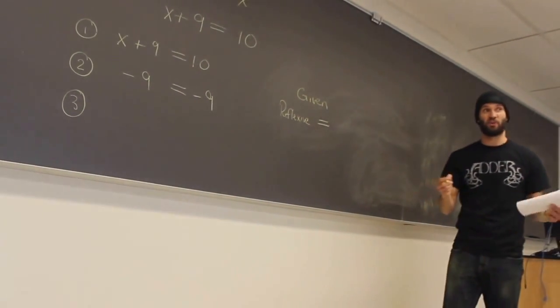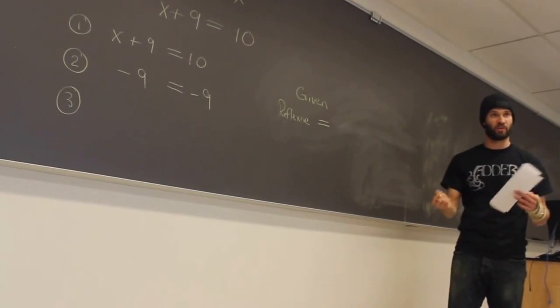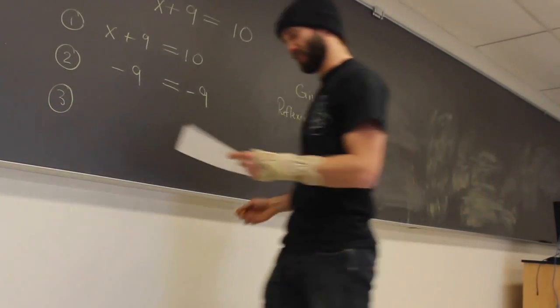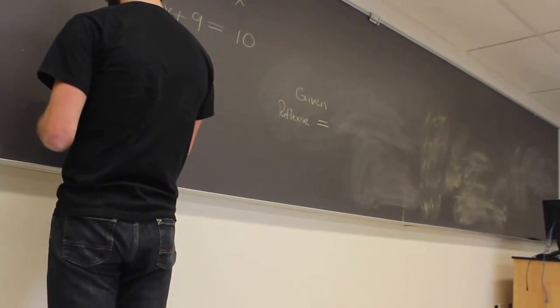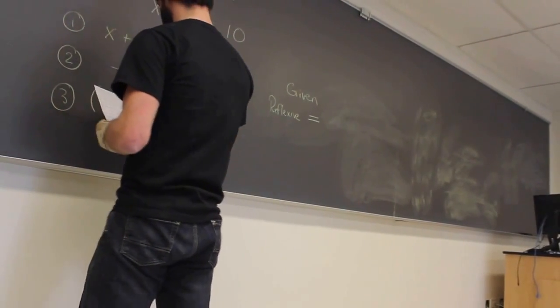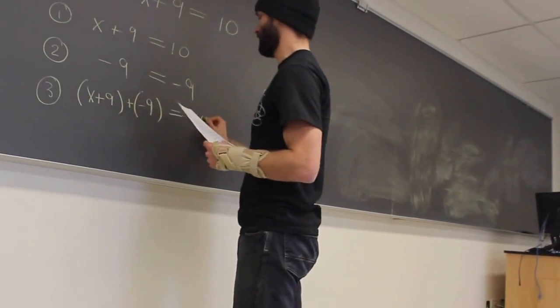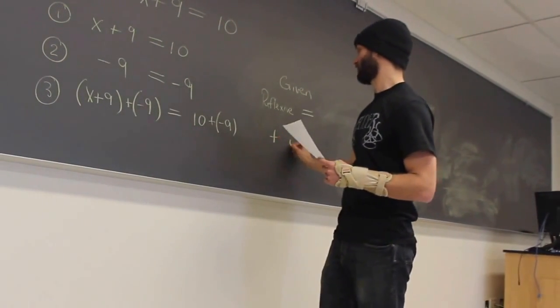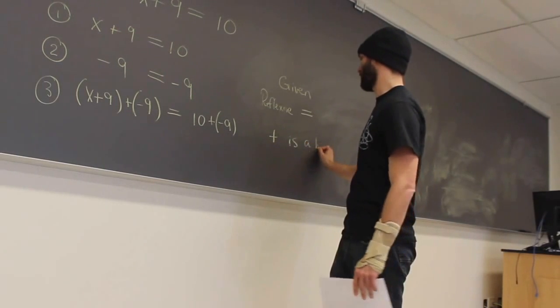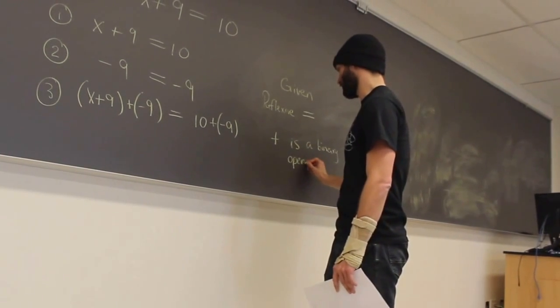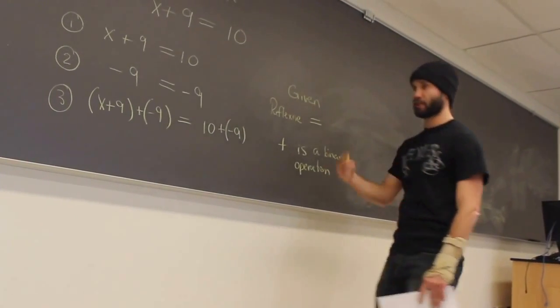Which means that if you have two numbers which are equal, right? This number is equal to this number. This number is equal to this number. Then, since it's a function, when I add the two, it doesn't matter how I represent the numbers. I get the same answer. So, from these two lines, I can claim, I did have to write these down because, again, this is not the best way to do it, but if I add negative 9 here, it's the same as taking 10 and adding negative 9. And that is because addition is a binary operation.